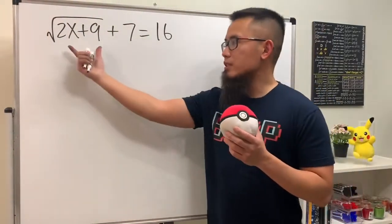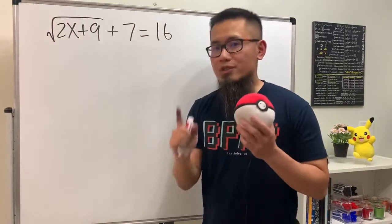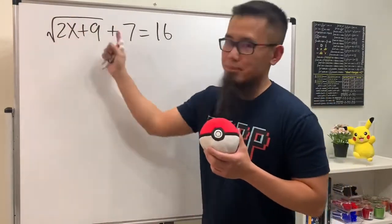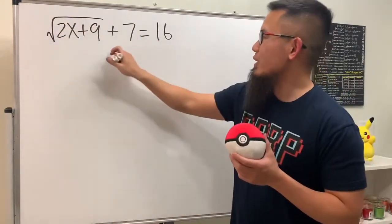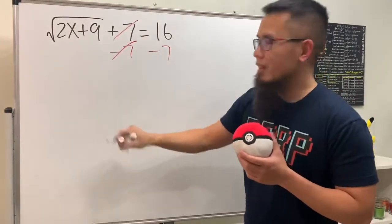Here we'll be solving this equation. Notice that we have the square root right here, so we are going to isolate this part first. To do that, we can just minus 7 on both sides.